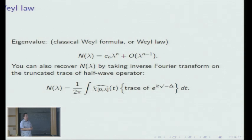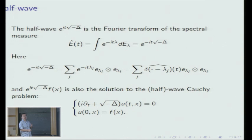The key idea to prove this formula in modern language is to use the so-called half-wave operator, and consider its trace by taking the inverse Fourier transform. This brings harmonic analysis and oscillatory integral analysis into spectral analysis — this is the key formula. The half-wave operator is the Fourier transform of the spectral measure, a special measure valued as the spectral projection. The Schwartz kernel of this operator has a formula where the trace part is the Fourier transform of a discrete measure supported on the eigenvalues.